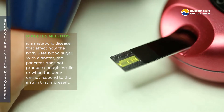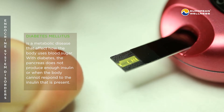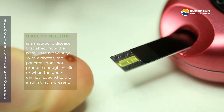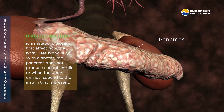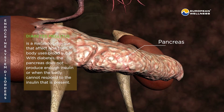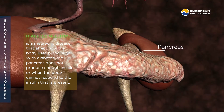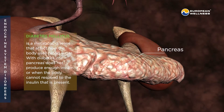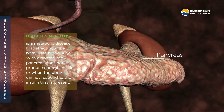Diabetes mellitus is a metabolic disease that affects how the body uses blood sugar. With diabetes, the pancreas does not produce enough insulin, or the body cannot respond to the insulin that is present.